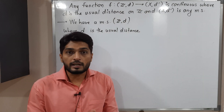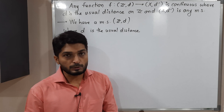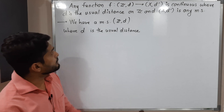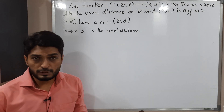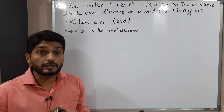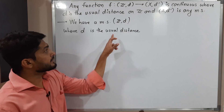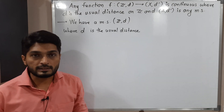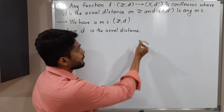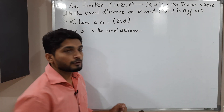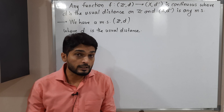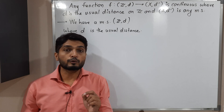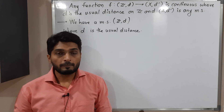We will start with the given information. The information is: Z_d is a metric space where d is the usual distance. We are familiar with the definition of usual distance: d(x, y) = |x − y|.